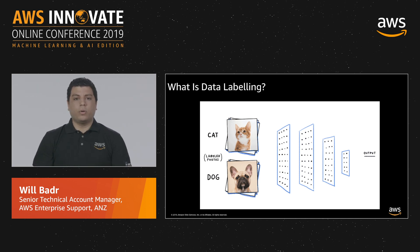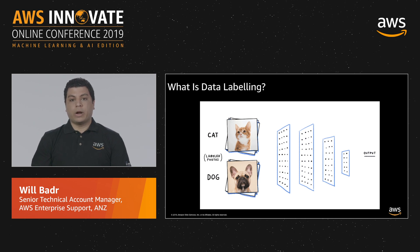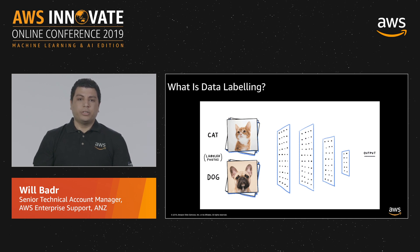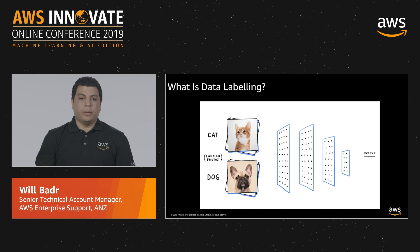Let's take an example of an image classifier that recognizes cats and dogs. We need to provide the algorithm with a few images of cats and dogs, along with the ground truth label. Then the algorithm will learn the correlation and the relation between the image and the target label, so that when you give it a new image that it hasn't seen before, it will be able to identify and recognize it.